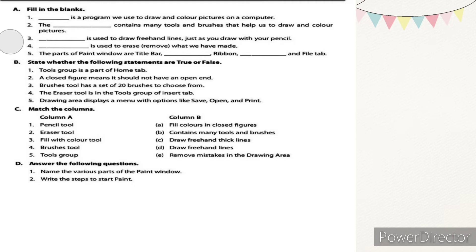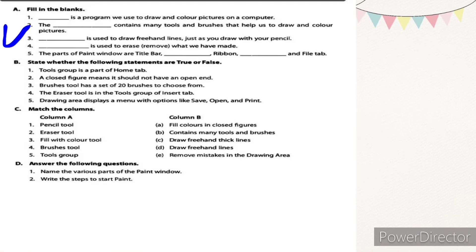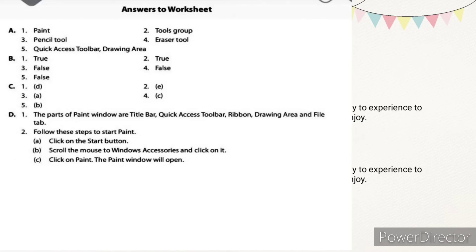Part one — fill in the blanks. Number one: dash is a program we use to draw and color pictures on a computer. Which program? Yes, MS Paint. So the answer is paint — you can write MS Paint or paint, both are correct.